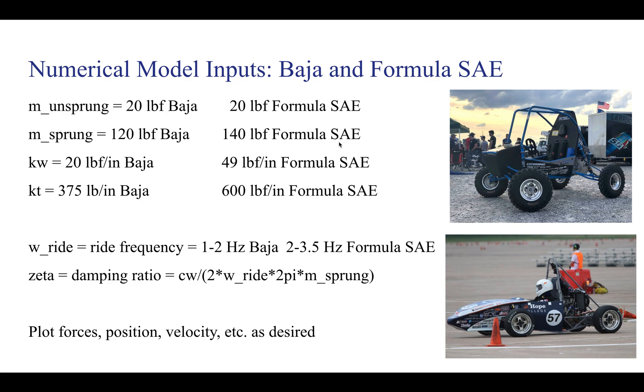For this model it's always important to have the proper numerical inputs. What we're using are essentially some common values given for Baja and Formula SAE cars. We can get an idea of the loading and the weight of each of these sprung and unsprung masses. We can get the stiffness of our tire and our suspension, get some of our damping, and basically the ride frequency is the natural oscillatory motion of the vehicle. So that's listed in Hertz and we have two different values for Baja and Formula SAE. From this we can plot the forces, positions, and we can get our velocities as we desire over different time steps.